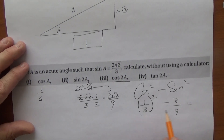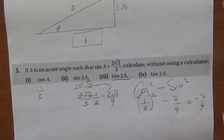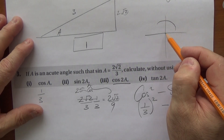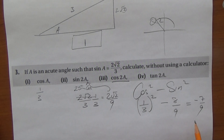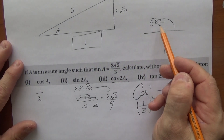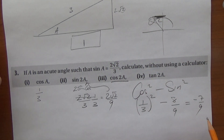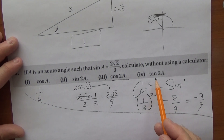So cos(2a) = 1/9 - 8/9 = -7/9. The angle has moved into the second quadrant, so a negative cosine is expected — this makes sense and resonates with what we know.